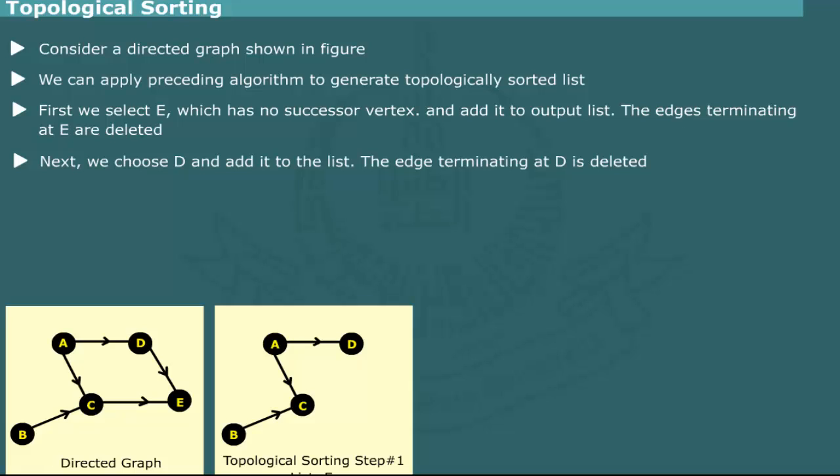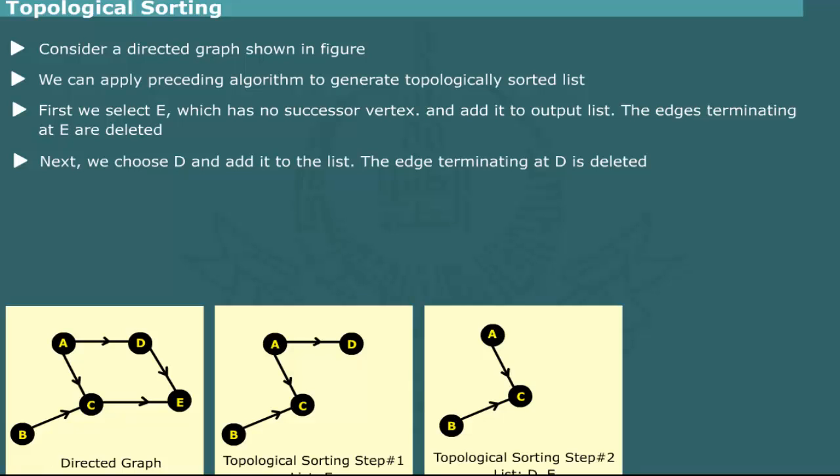Next, we choose D which has no successor and add it to the list. The edge terminating at D is deleted. Now, the list contains vertices D and E.